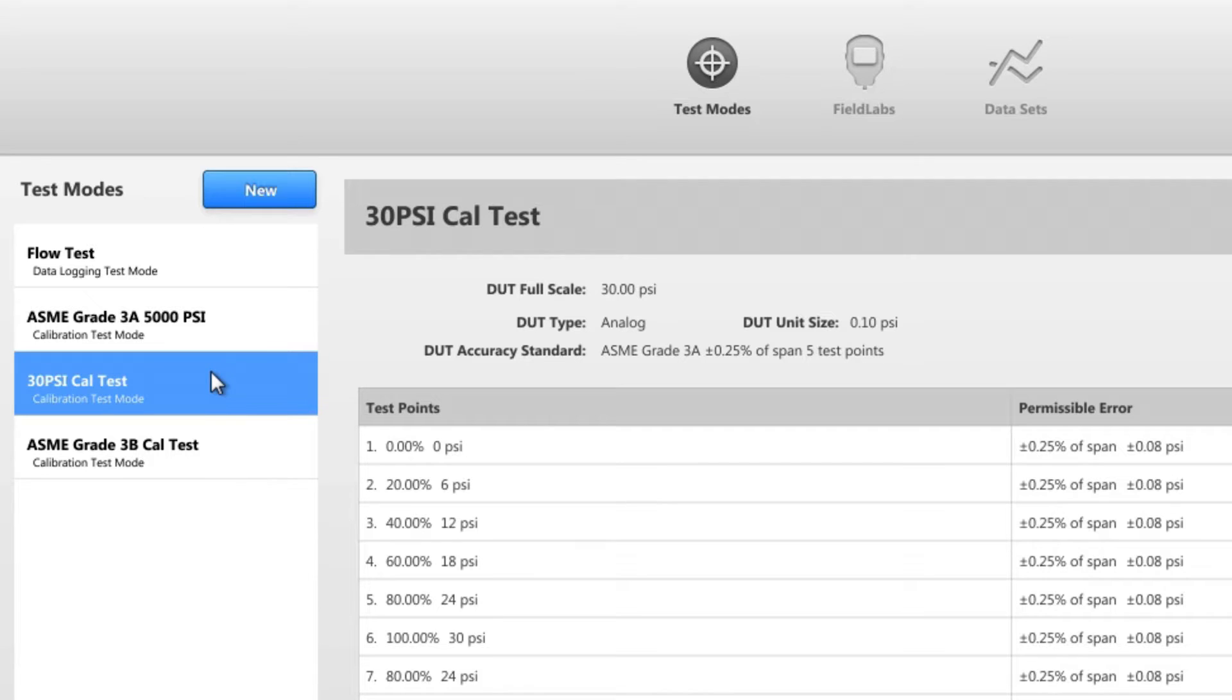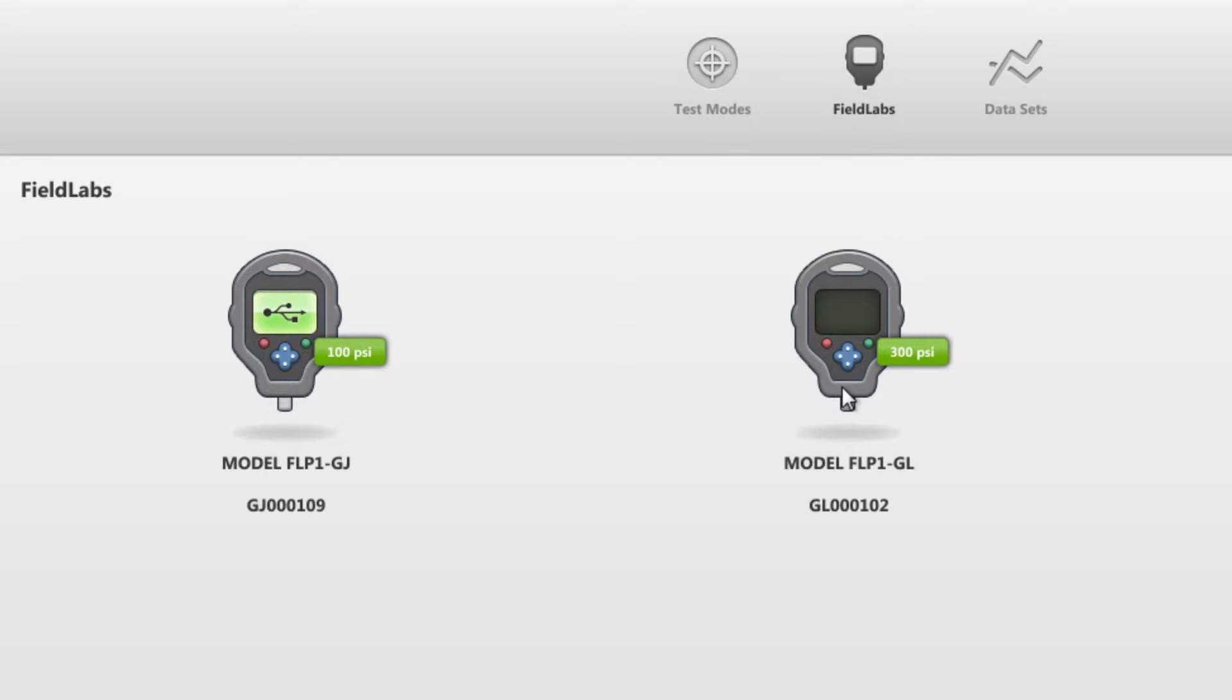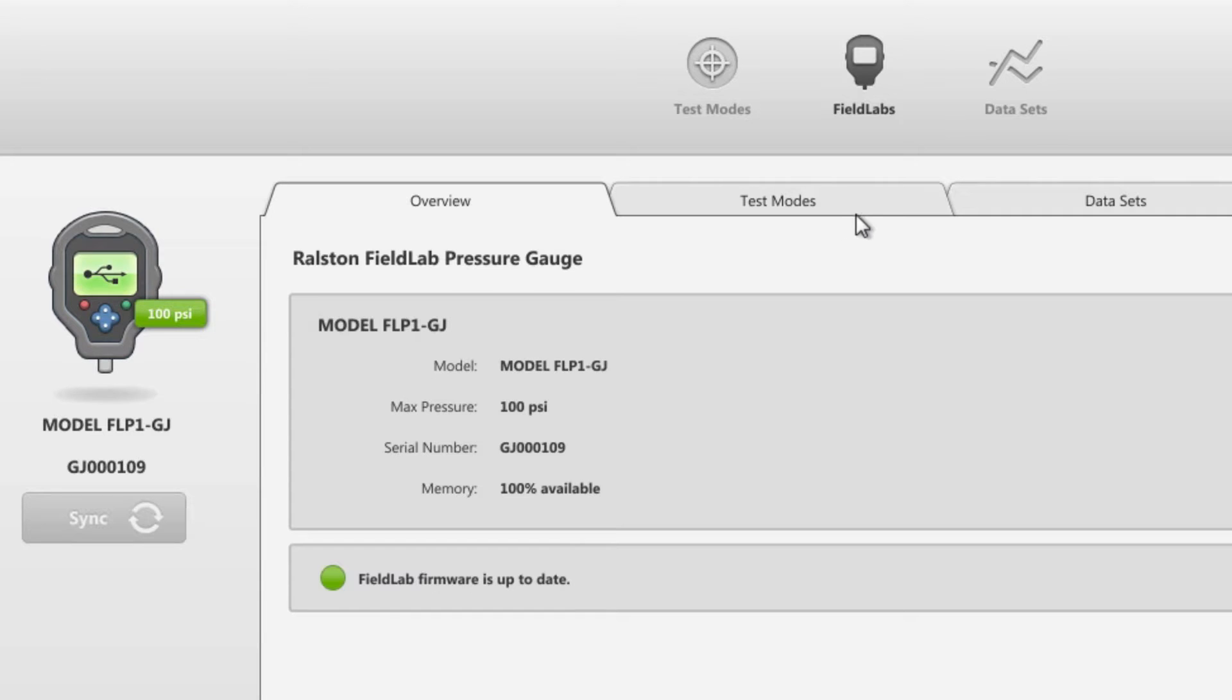We then click the Field Lab icon in the header. You can have multiple Field Labs loaded in the Field Lab desktop, but you can only load tests to a single connected Field Lab. We then select the Field Lab we want to load the test to, and select the test modes tab.